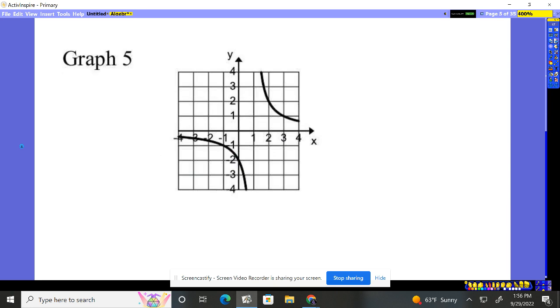The next one. Notice when X has a value here, one, which is an asymptote there, it doesn't have a value. So this is not continuous.